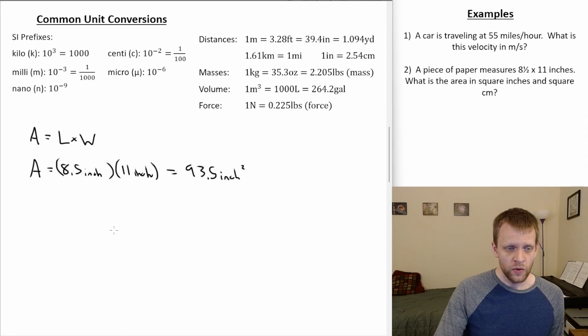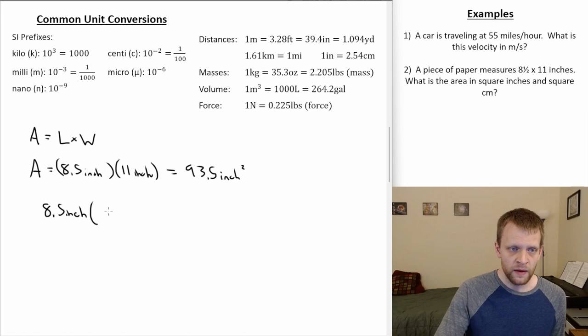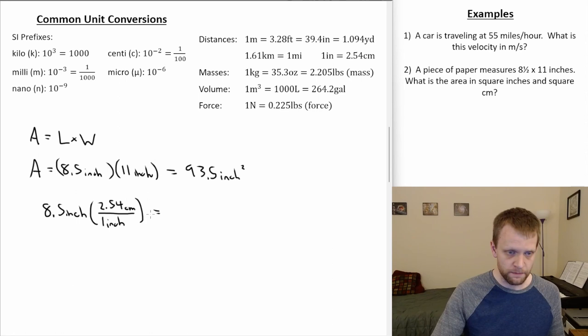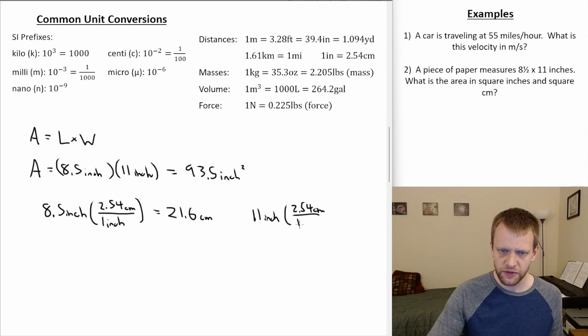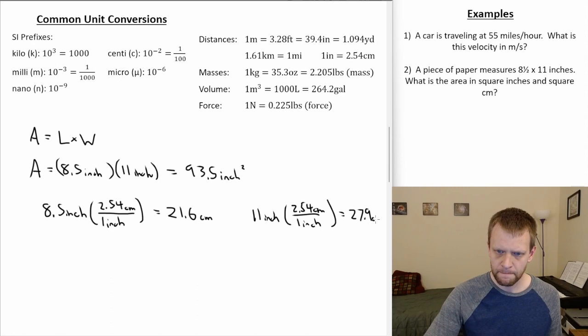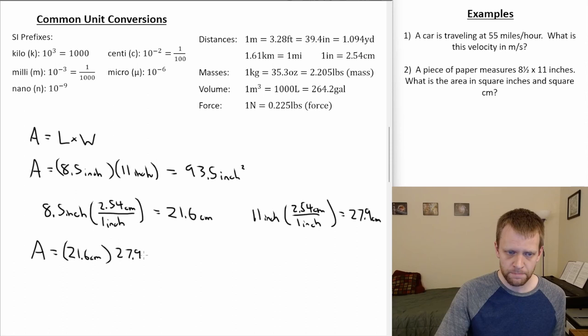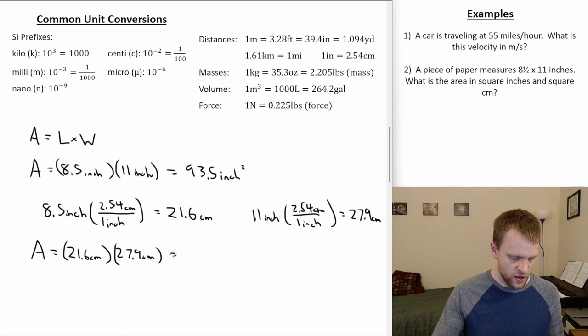Let's convert each of these distances from inches to centimeters. For 8.5 inches: we know 1 inch equals 2.54 centimeters, so we put inches in the denominator and 2.54 centimeters in the numerator, giving 21.6 centimeters. For the width of 11 inches, we do the same conversion — 2.54 centimeters over 1 inch — and 11 times 2.54 gives 27.9 centimeters. So the new area is 21.6 centimeters times 27.9 centimeters, and 21.6 times 27.9 gives 602.6 square centimeters.